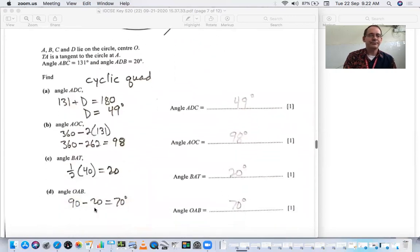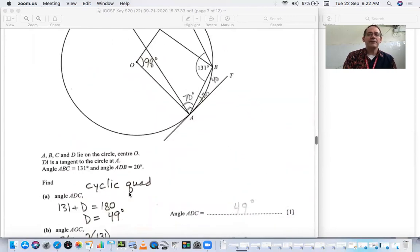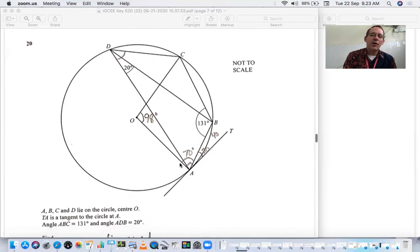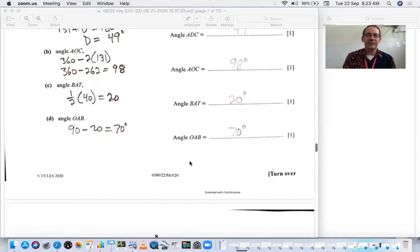Angle OAB. Notice that OAT, this is from the origin to the tangent. So that means this is a 90. If from the origin to the tangent, it's going to be perpendicular. So if we take 90 minus the 20 degrees, we get the other one, which is 70. 90 minus 20 equals 70 degrees.